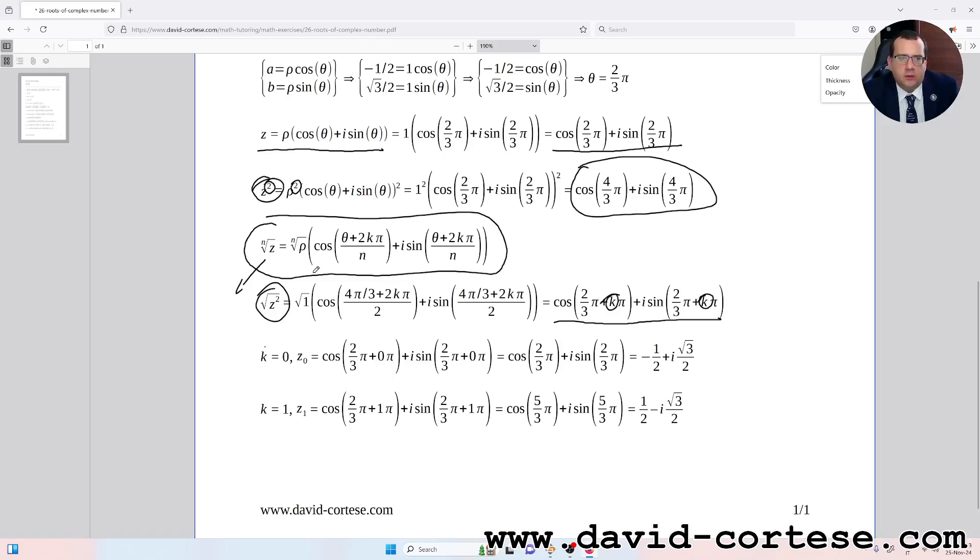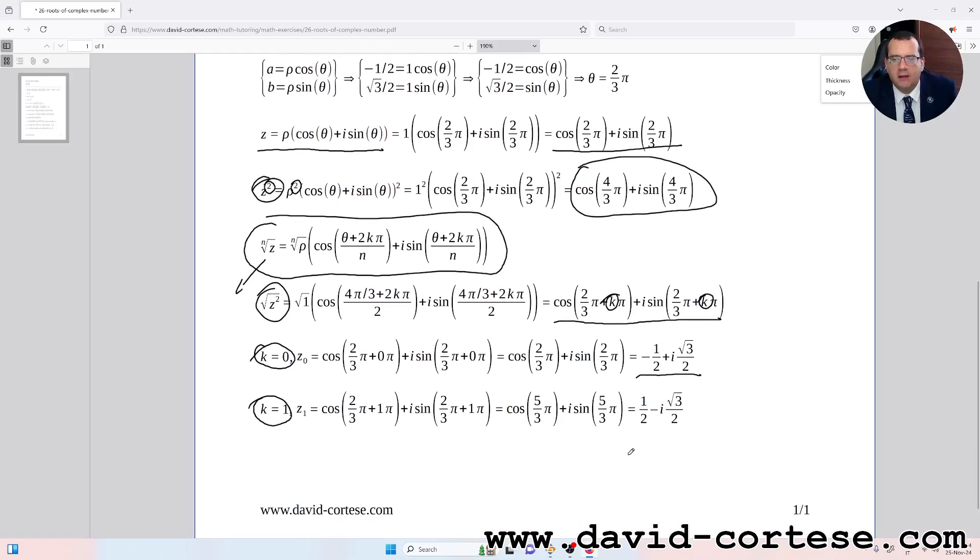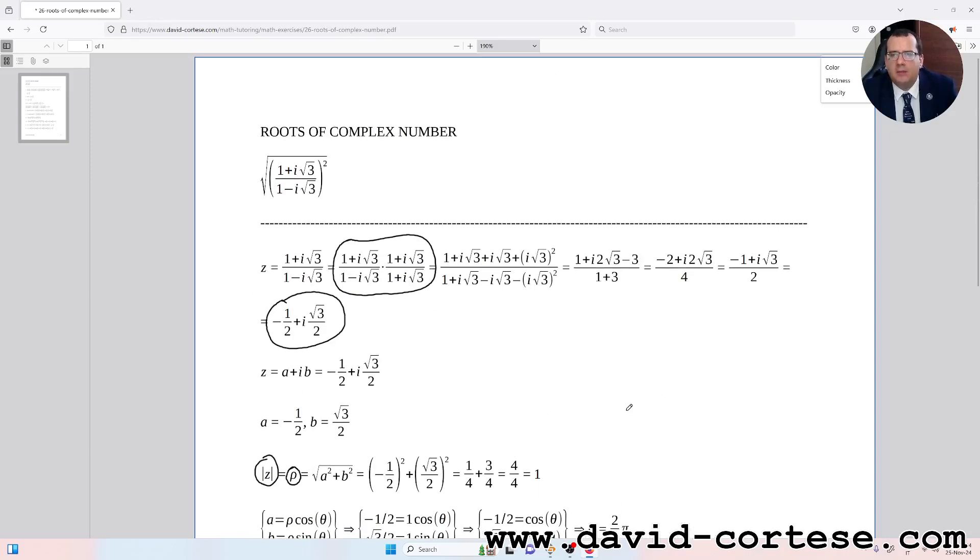When k equals 0, we obtain this root: -1/2 + i√3/2. And when k equals 1, we obtain another root: 1/2 - i√3/2. So we have solved this important exercise that is an exam exercise.